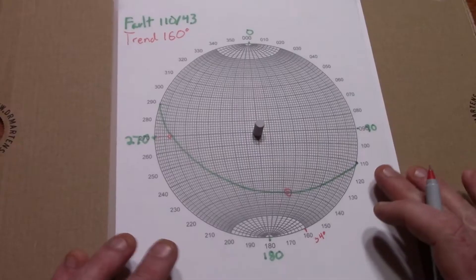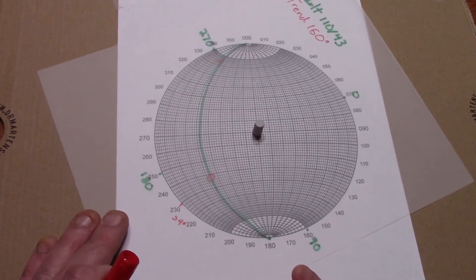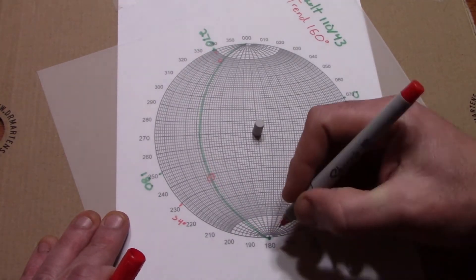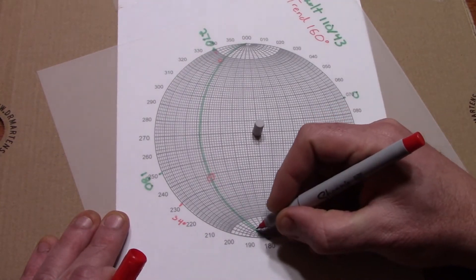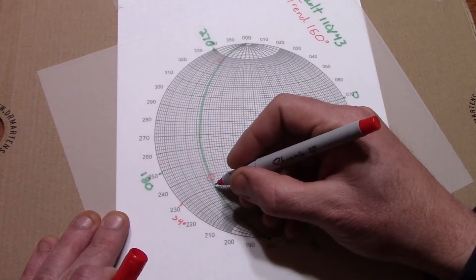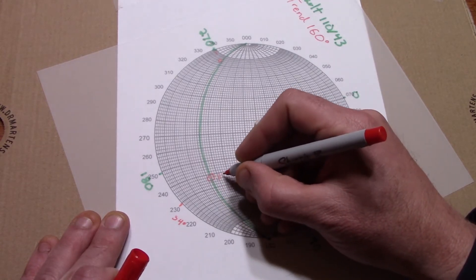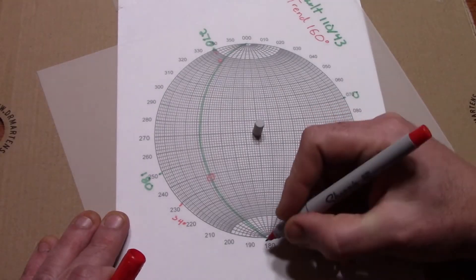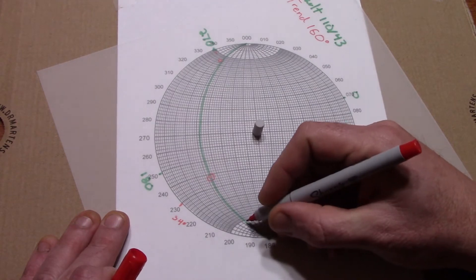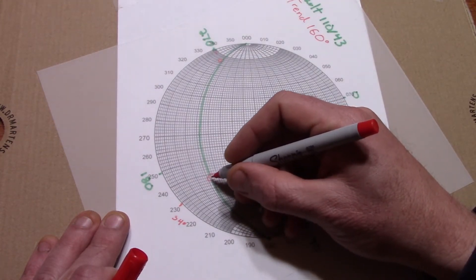Now to measure this on your stereo net, take the strike line of the plane and, with minimal rotation, line up the strike north-south. The point indicating our lineation is closer to the south pole. So start at the south end of your strike line, and count the gradations along the great circle into your linear point. 10, 20, 30, 40, 50, and 58 degrees.